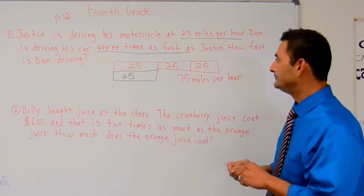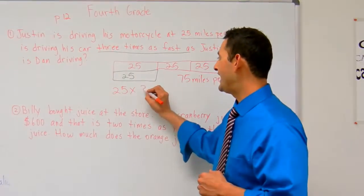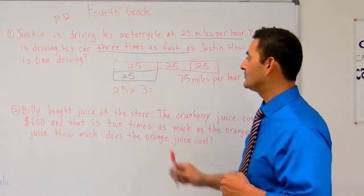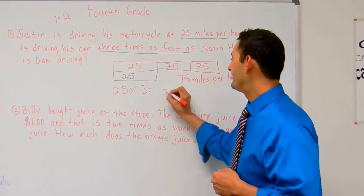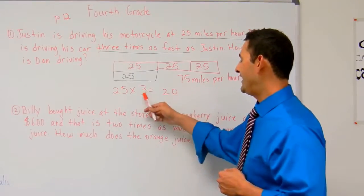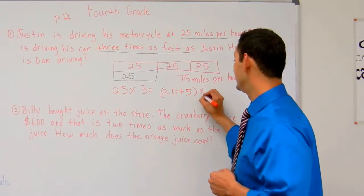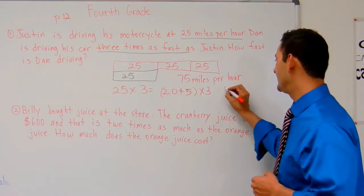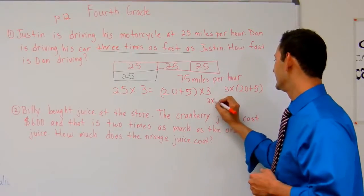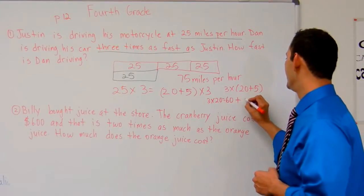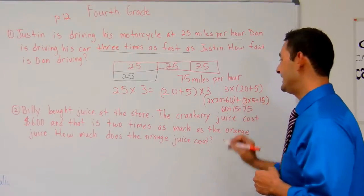Another way we can do it is to write an equation. Justin is driving his car at 25 miles per hour, and Dan is driving 3 times as fast as Justin. So we can write 25 times 3 equals what. Using the distributive property: I've got 2 tens, which is 20, plus 5 — so that's (20 + 5) times 3, which is the same as 3 times 20 plus 3 times 5. That gives us 3 times 20 equals 60, plus 3 times 5 equals 15. So 60 plus 15 equals 75.